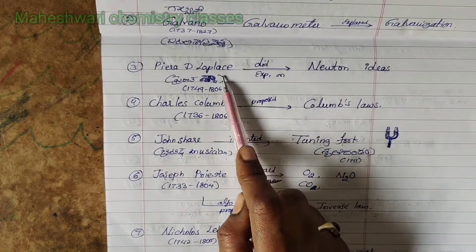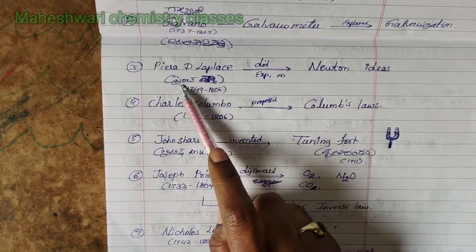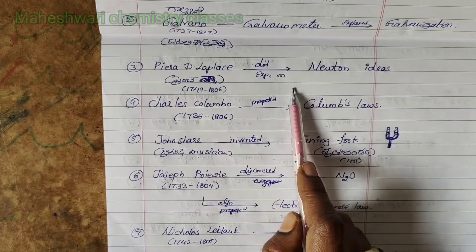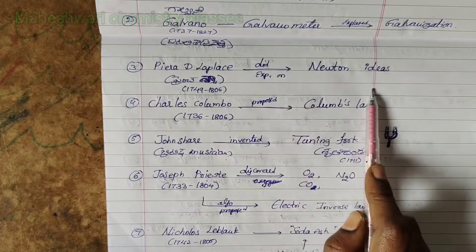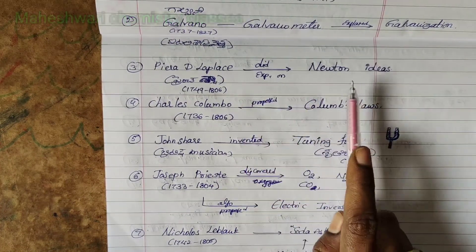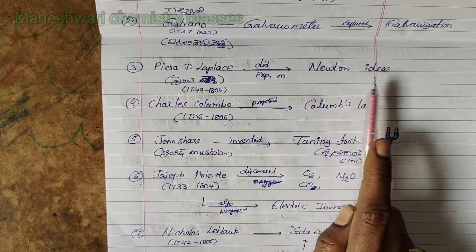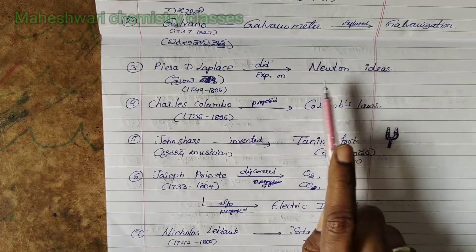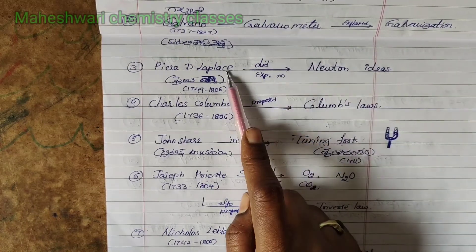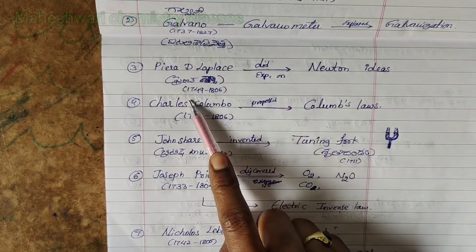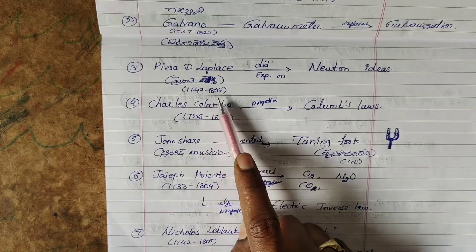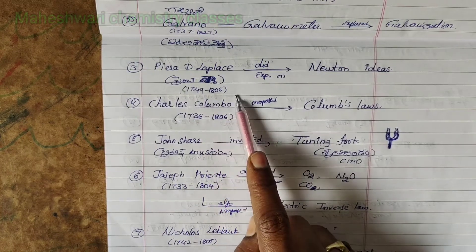Third point: Laplace did experiments on Newton's ideas. Laplace is a French scientist, time duration 1749 to 1827.